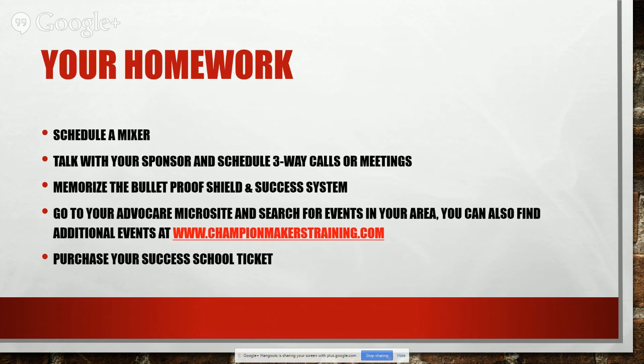Here's your homework for Part 2. The next installment covers the pay plan. Your assignments: schedule a mixer; talk with your sponsor and schedule three-way calls or two-on-one meetings; memorize the Bulletproof Shield and how to overcome the main objections; know the Success System and how people move through it; and go to your AdvoCare microsite, click the events tab, and search for events in your area — or search a different state if you have prospects there. You can also find additional events at championmakerstraining.com.